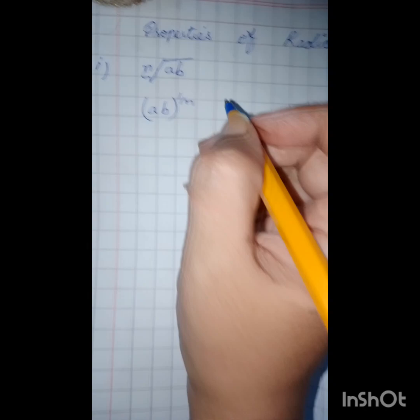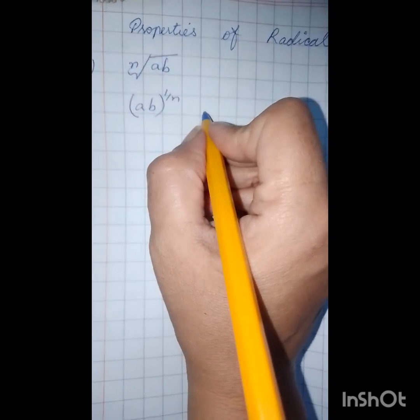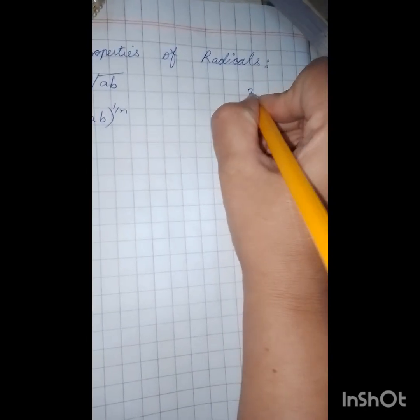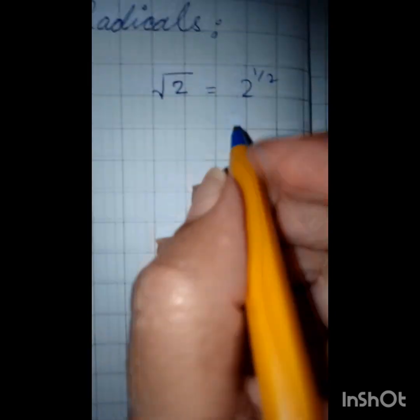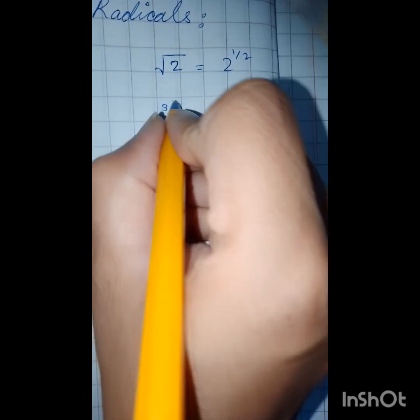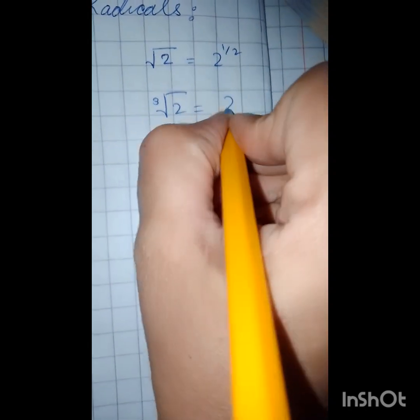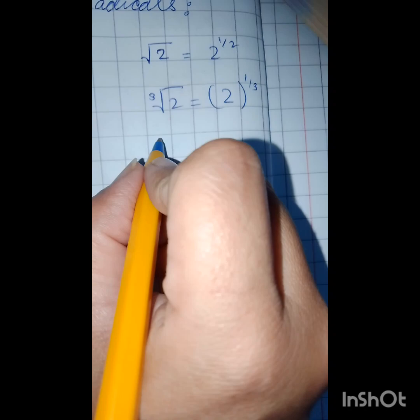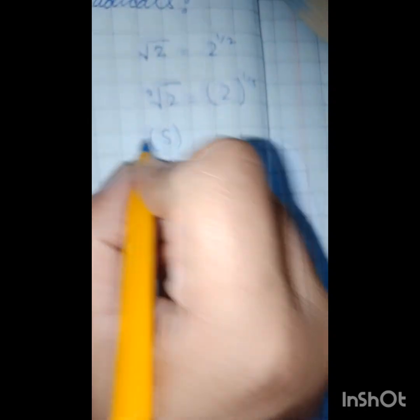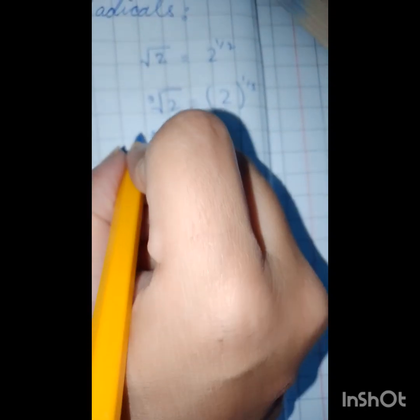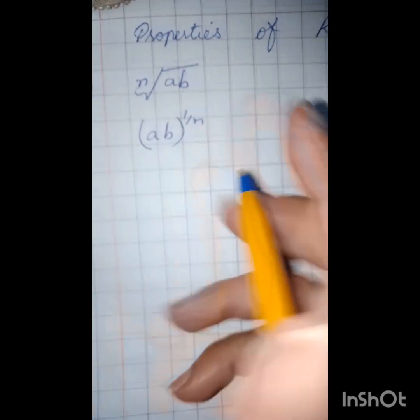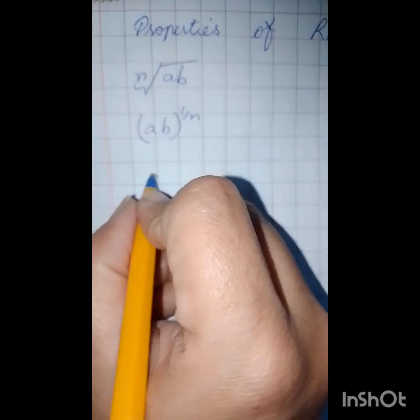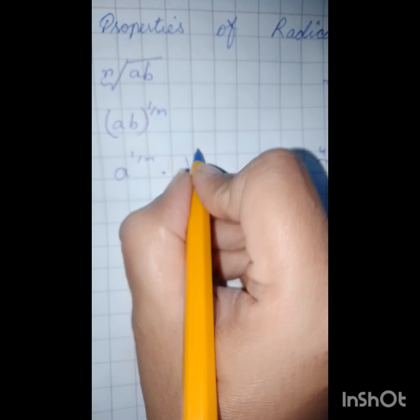We already know that we can write the variables or numbers and the radical sign or index will come in the form of one. Similarly I'm showing you some examples: square root equals one upon two, cube root equals one upon three, and fourth root equals one upon fourth. Whatsoever the power of the radical is there, you will simply write it in fraction form.